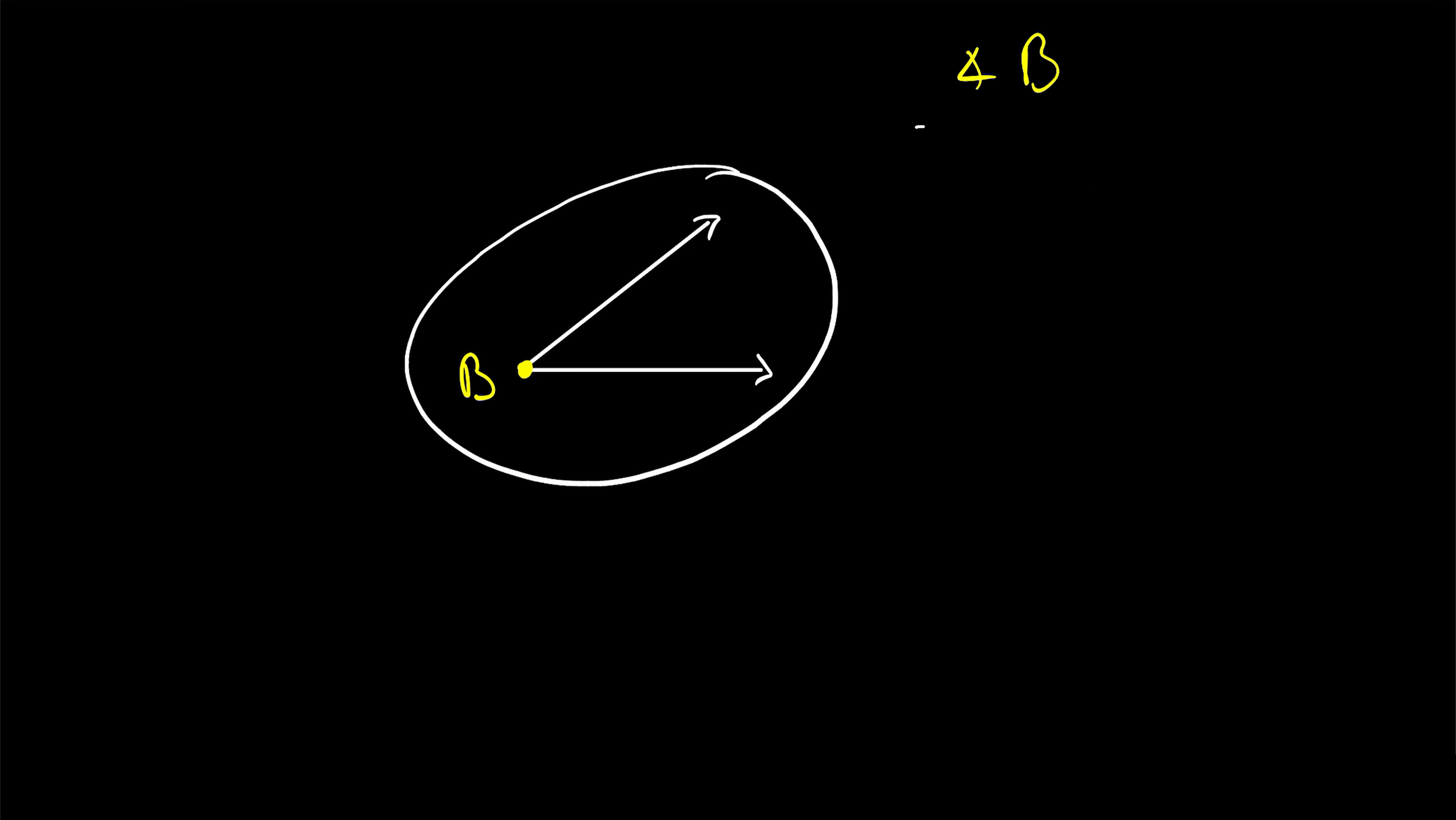But naming angles isn't always quite this easy. Suppose we have another ray that shares that same endpoint B. Then, if we write angle B, which angle are we talking about? Are we talking about this big angle, or this small angle, or this other small angle? There's no way to tell, so we need to use a different style of naming these angles.